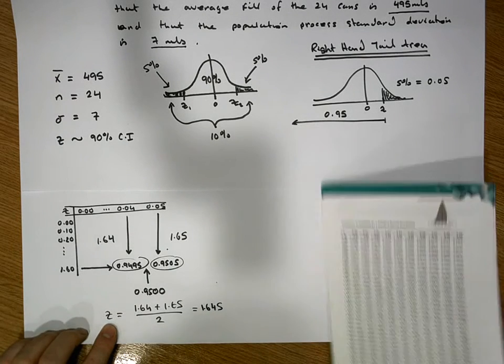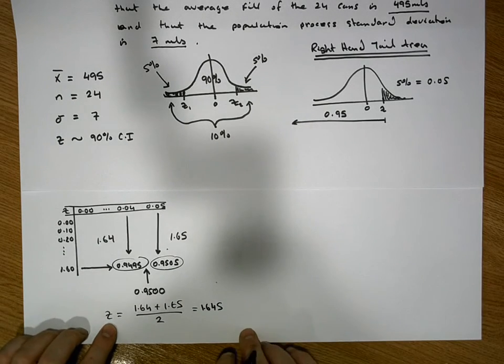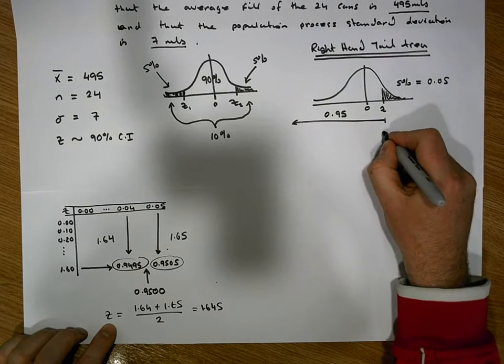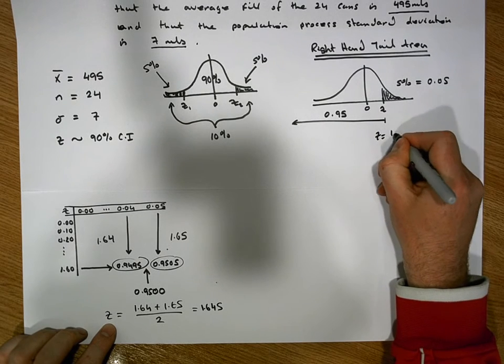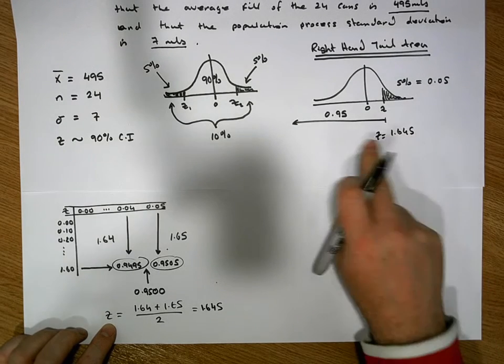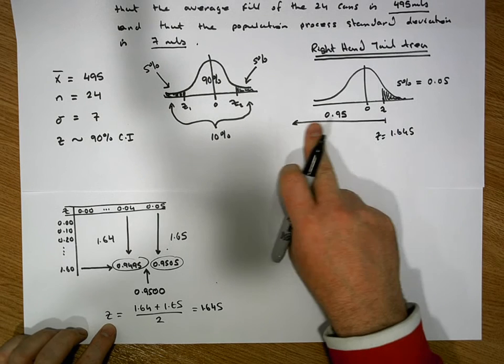So what we now know is this, is that a z-score of 1, so z is equal to 1.645 has 0.95 of the area to the left-hand side.